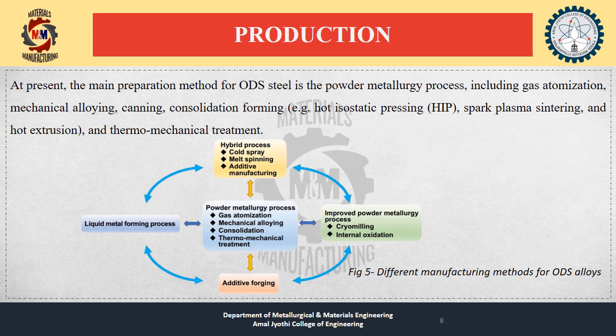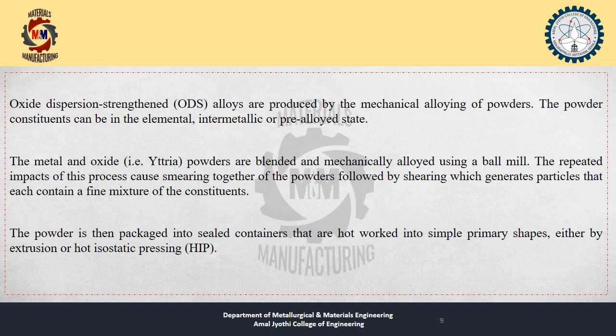Production: There are several different production methods for oxide dispersion strengthening. It is mainly manufactured by a powder metallurgical process. Other processes include gas atomization, cryo milling, additive manufacturing, cold spray technology, etc. ODS alloys are produced by mechanical alloying of powders. The powder constituents can be in elemental, intermetallic, or pre-alloyed states. The different production methods for ODS alloys are: powder metallurgical route, melt infiltration, electrolytic oxidation, plasma spraying, and mechanical alloying. Each method has its own advantages and disadvantages, and the specific method used may depend on the desired properties of the ODS alloys and the specific equipment and facilities available.